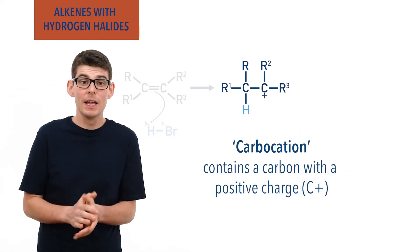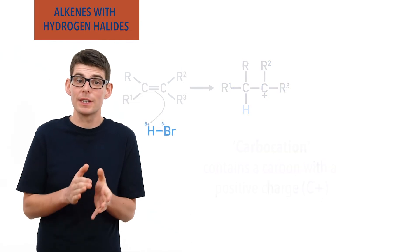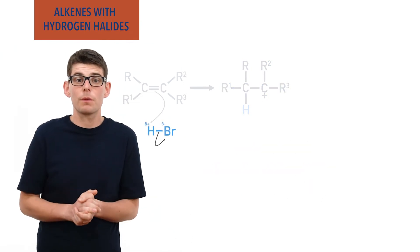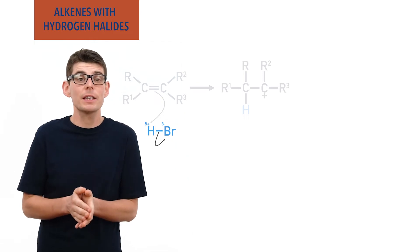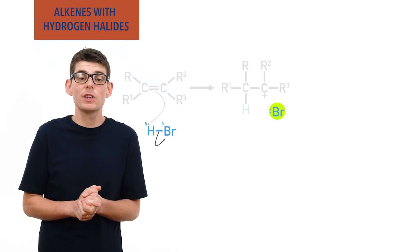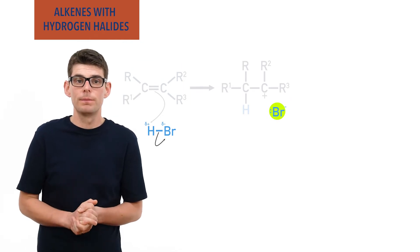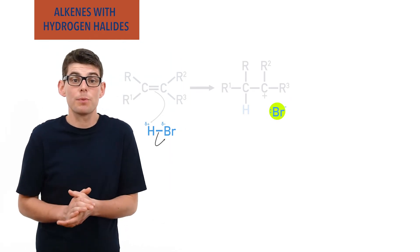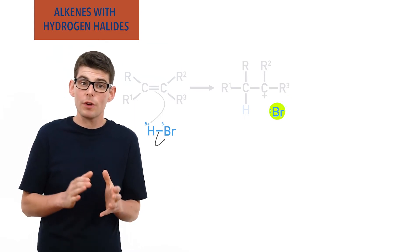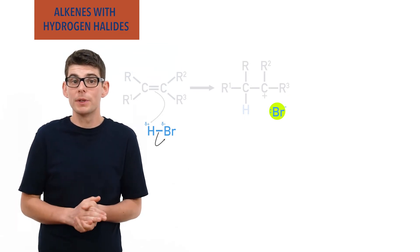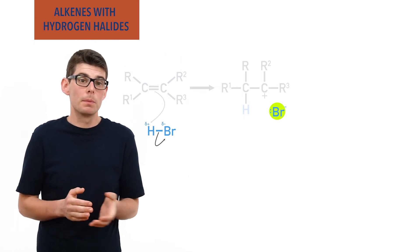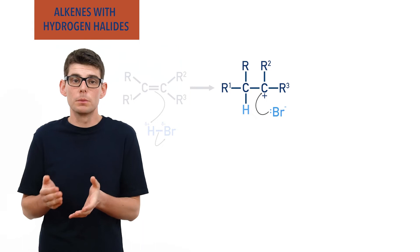An ion that contains a carbon atom with a positive charge is called a carbocation. As all this is happening, the bond between the hydrogen and halogen will break. The pair of electrons from the bond go to the halogen and become a lone pair. The halogen ends up becoming a negatively charged halide ion. The negatively charged halide ion will get attracted to the positively charged carbon in the intermediate and use its new lone pair of electrons to form a bond to it, forming the final product.